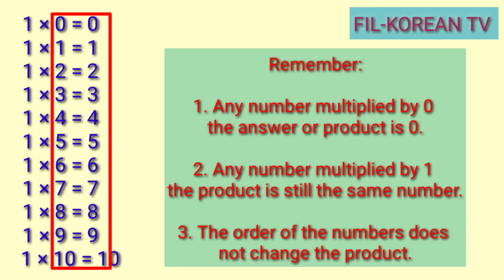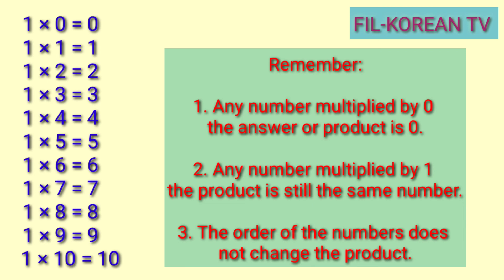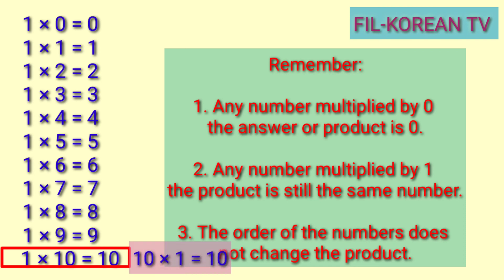Ibig sabihin, kahit anong number kapag itimes natin sa 1, yung answer ay yung number mismo na yun. And number 3, the order of the numbers does not change the product. Ibig sabihin, kahit baligtarin natin yung numbers, ang product o ang answer ay ganun pa rin, hindi yun magbabago. Kagaya ng 1 x 10 equals 10. Kapag binaligtad natin, 10 x 1 equals 10 pa rin.